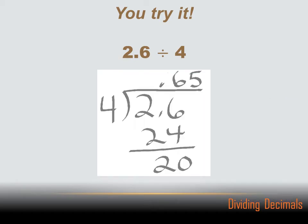The problem was 2.6 divided by 4. So I set it up as a regular division problem. I got 2.6 divided by 4, and I take my decimal point, and I move it straight up. Now, 4 won't go into 2, so I got to go 4 into 26.